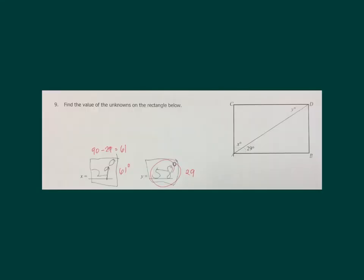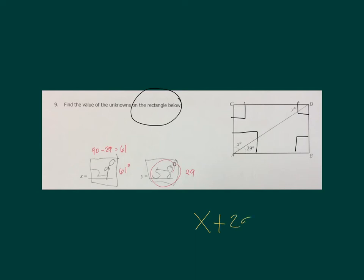Next: find the value of the unknowns in the rectangle. For a rectangle, the angles at the corners are always 90 degrees. Since it's a 90-degree angle at the corner, the sum of X and 29 must equal 90. So X plus 29 equals 90, meaning X is 90 minus 29, which gives 61. That's the value of X.